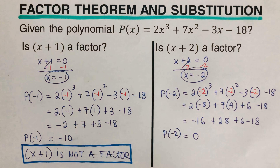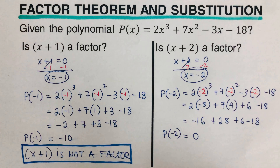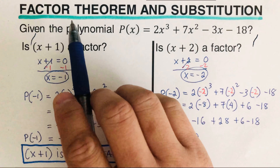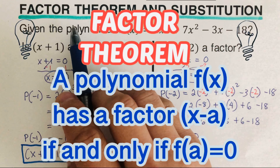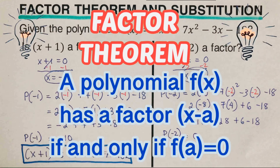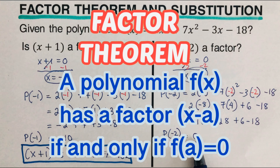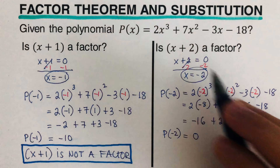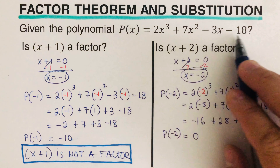When I did the arithmetic, it came out to p of negative two equals zero. Based on the factor theorem, a polynomial f of x has a factor x minus a if and only if f of a equals zero. Since p of negative two equals zero, we can say that x plus two is a factor.